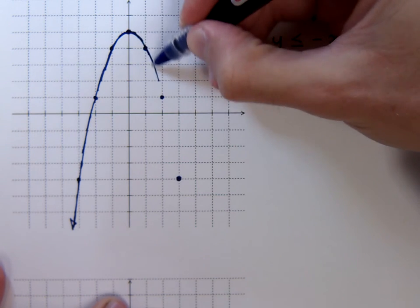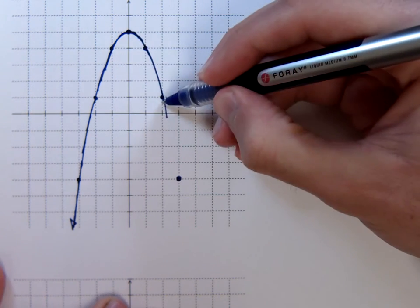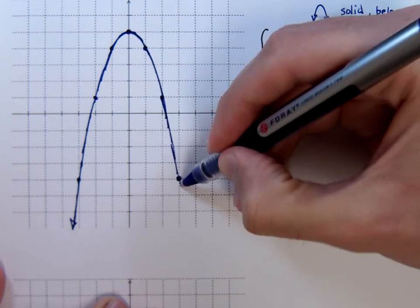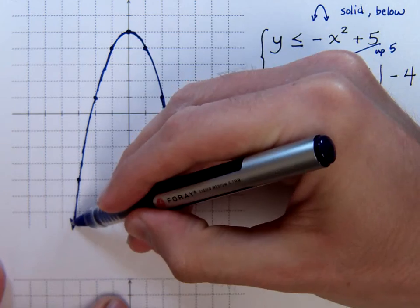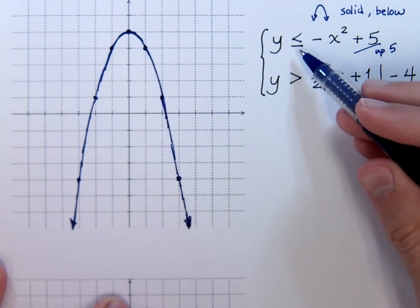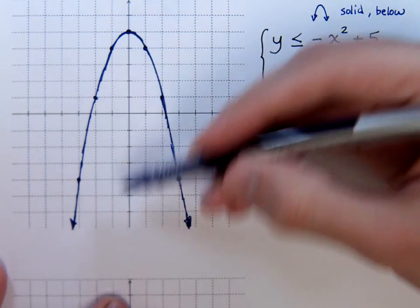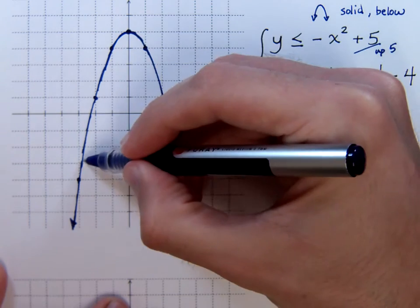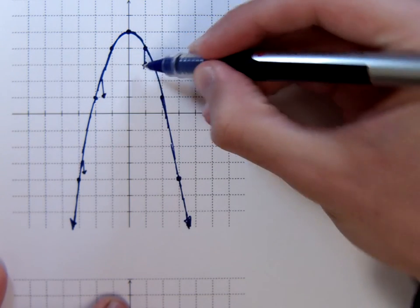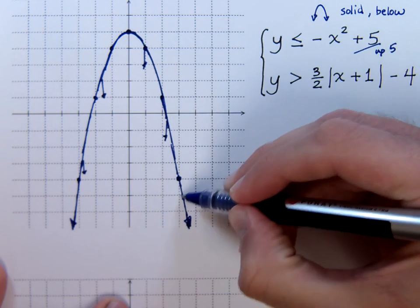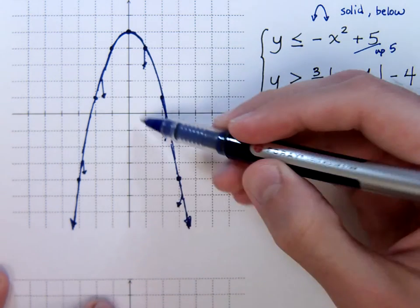All right, now this is a solid line because the inequality was less than or equal to. And for this guy, I'm going to be shading below. Now I don't want to shade this whole thing in just yet. Just put little arrows showing that you are going to be shading below this. We know that we're going to be shading basically inside this parabola.